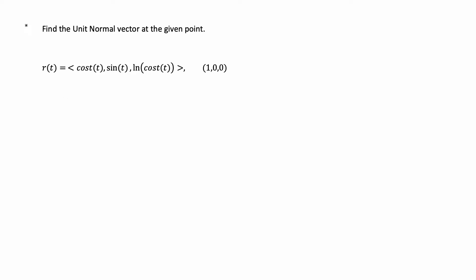Hey guys, in this video I want to go over this Calculus 3 problem. It says find the unit normal vector at the given point, and we're given a vector function r of t in three-dimensional space and a point in three-dimensional space which is (1, 0, 0). Let's go ahead and get started with solving this problem.